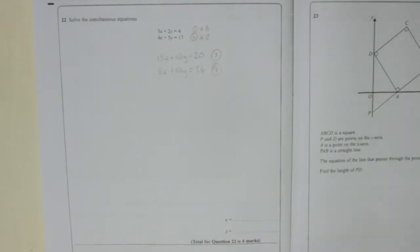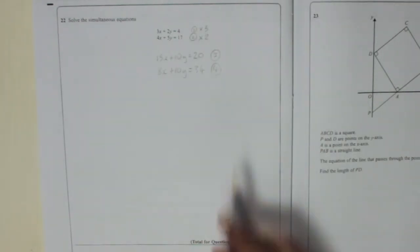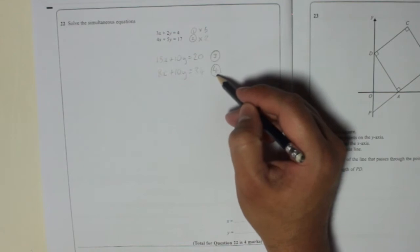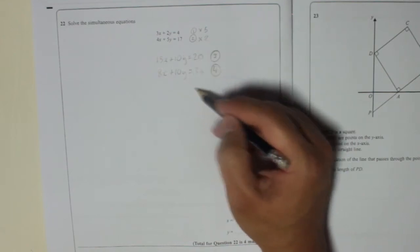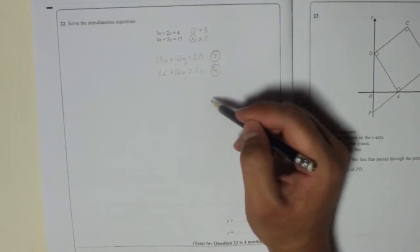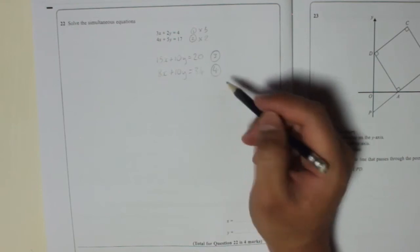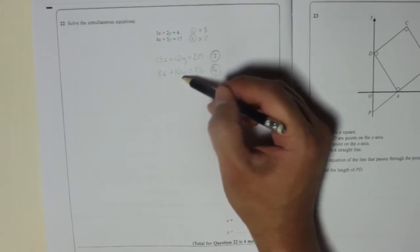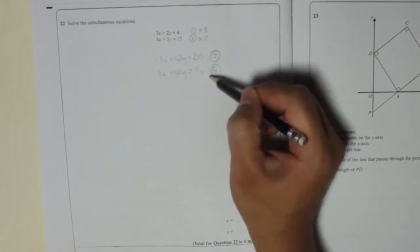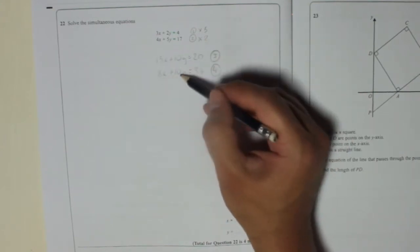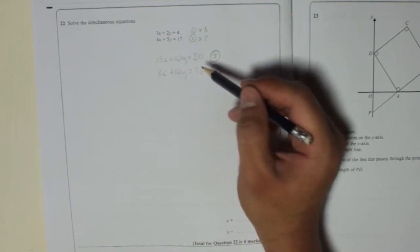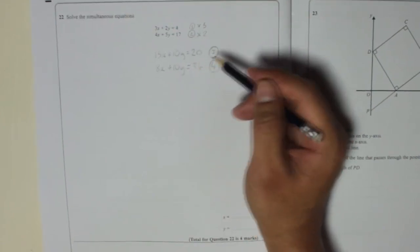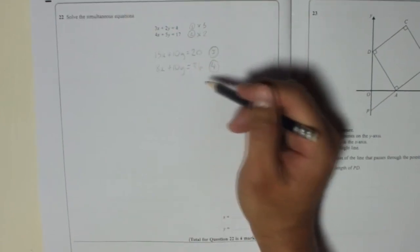So now, what we're going to do, we need to do something to line 3 and 4 which will get rid of our y's. And it's either going to be a plus or a minus. So you're either going to subtract one line from the other or add the two lines together. Now think about this. You've got 10y and 10y. If you add both lines together, you're going to end up with 10y plus 10y, which is 20y. That does not get rid of the y's. So what we're going to have to do is subtract one line from the other.